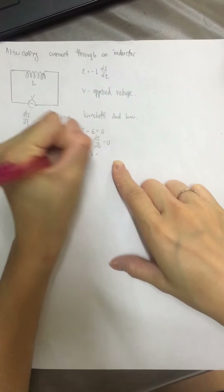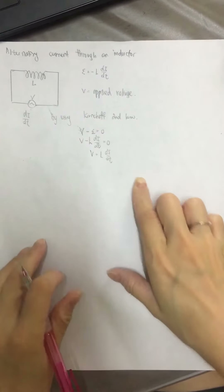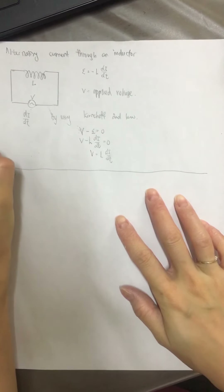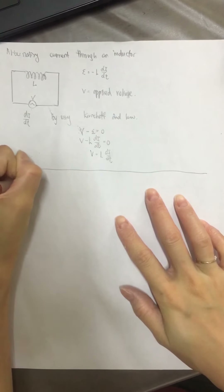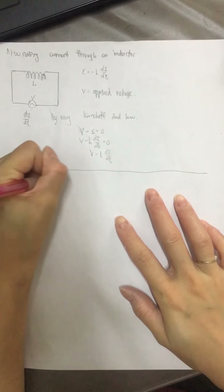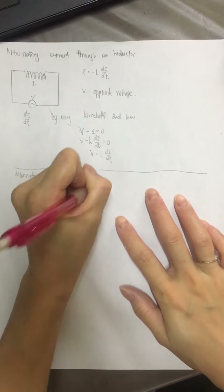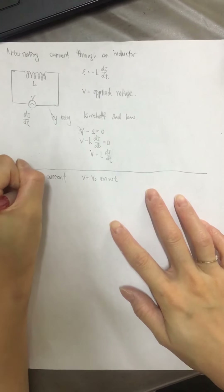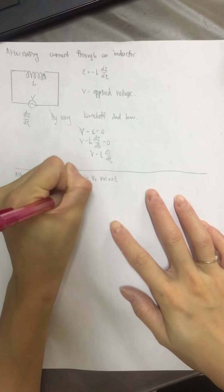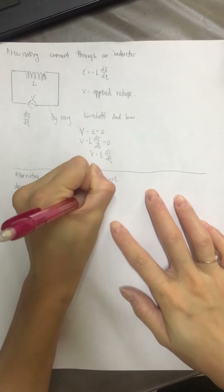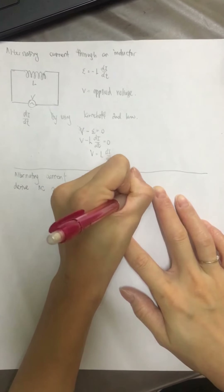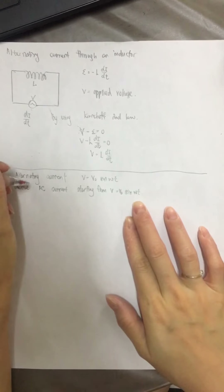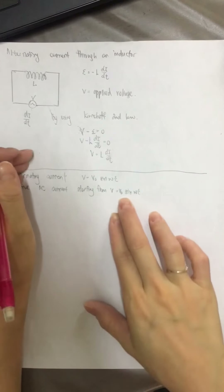Rearranging this gives V equal to L dI/dt. We know that for alternating current, V is equal to V₀ sine ωt. We want to derive the equation for the current flowing through the inductor. In other words, we want to derive the current equation starting from V equal to V₀ sine ωt.